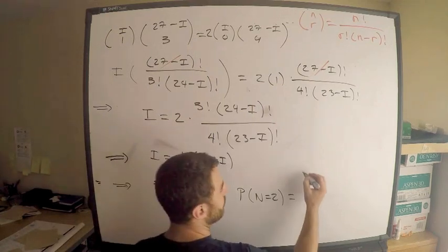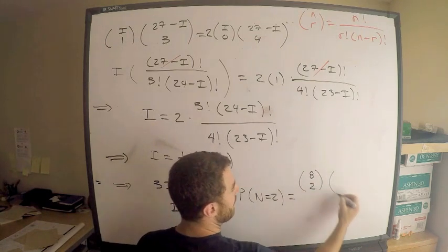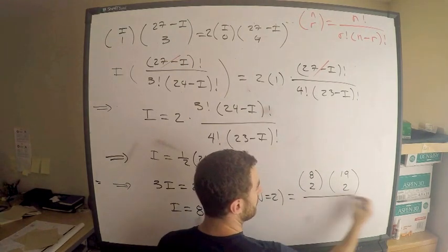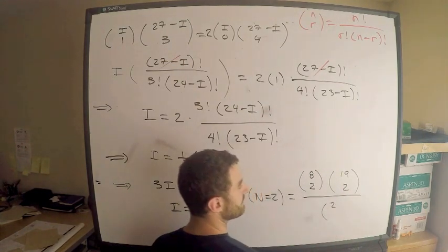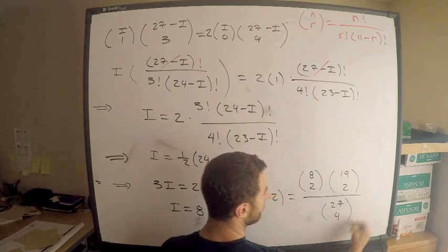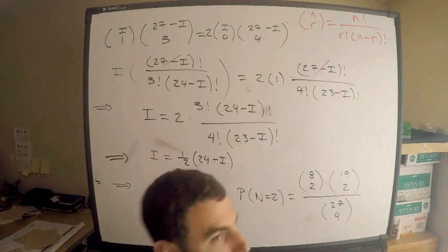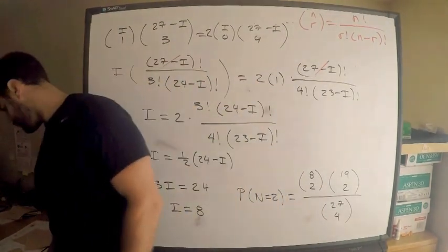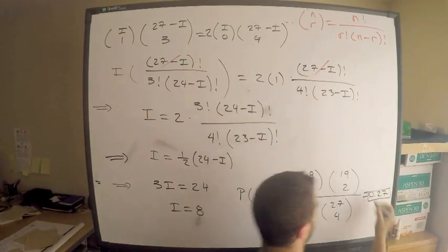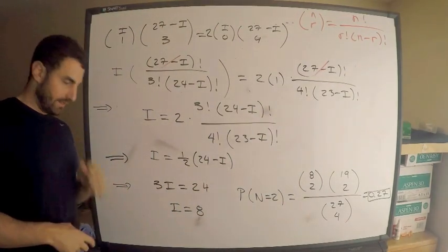Write down the probability mass function again, or just think about this logically. We're choosing out of 8 insured bags, we want exactly 2. And out of the rest, 27 total, so out of 19, we want 2 uninsured. Divided by the total, which was 27 choose 4. So this is my answer, whatever the hell that is. I'm not going to do it, it's annoying. What is it? 0.27. So this is the answer, 0.27. That takes care of it. Tricky question. Very tricky in my opinion. Tell me what you think.